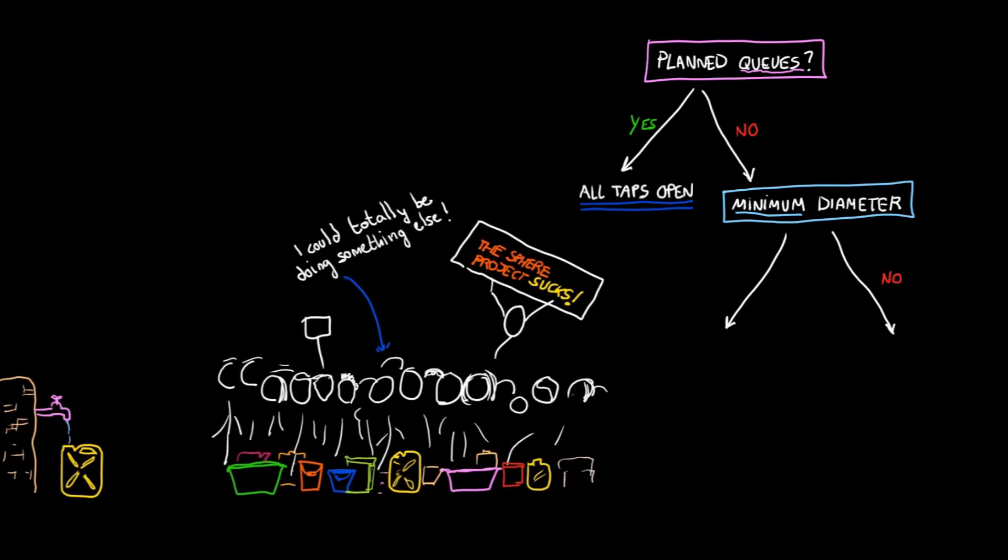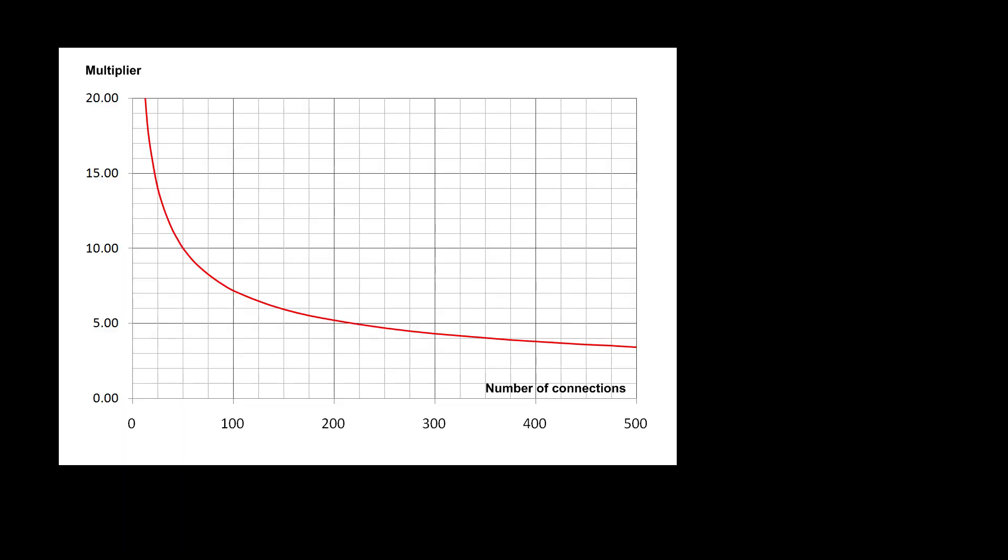So if no minimum diameter is installed, we use a simultaneity approach. We would take the average flow and multiply it by a coefficient that corrects it to a more realistic figure. With just one tap, it's either on or off. But as more houses are connected, each of them with their taps either on or off, a more accurate picture of the peak flow starts to emerge, and the simultaneity coefficient gets smaller. For 100 houses, for example, you would multiply by 7.